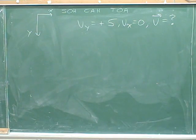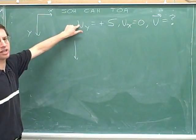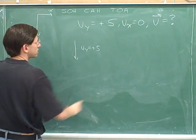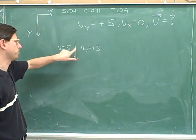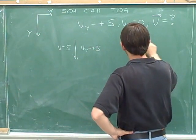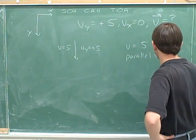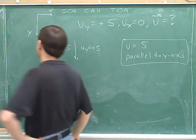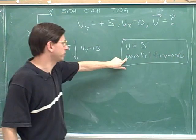Let's answer this question. We can draw the y component. Down is positive and the y component is positive, so the y component is pointing down. And since there is no x component, the magnitude of the overall vector is just the magnitude of the y component, which is 5. We have to indicate the direction, which is parallel to the y-axis. That wouldn't mean anything unless you told the reader that your positive y direction was down, so it would also be part of your answer to indicate that the positive y direction is down so we know what parallel to the y-axis means.